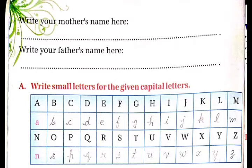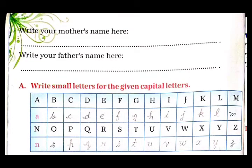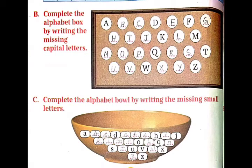Exercise A: यहाँ पर दिये गए capital letters के लिए आपको small letters write करना है. Exercise B: Complete the alphabet box by writing the missing capital letters. Missing capital letters को write करके alphabet box को complete करना है. Exercise C: Complete the alphabet bowl by writing the missing small letters. Missing small letters को write करके alphabet bowl को complete करना है.